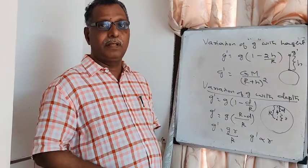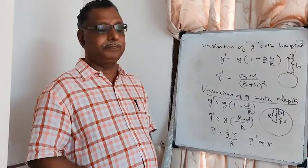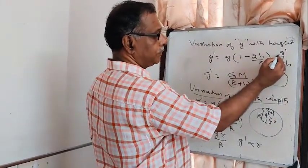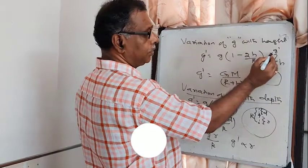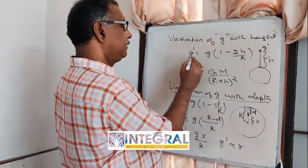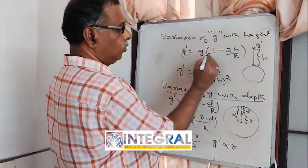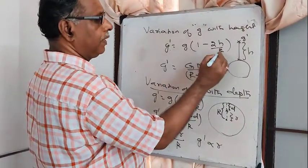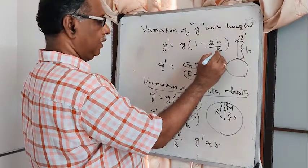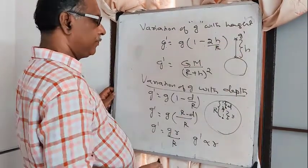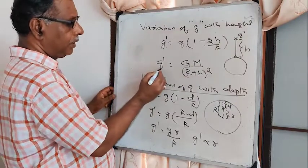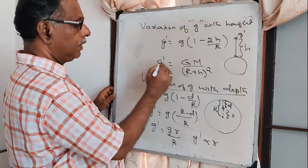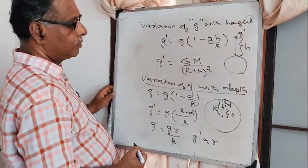For the variation of g with altitude: at a height H above the surface of the earth, the approximate relation is g' = g·(1 − 2H/R), where R is the radius of the earth. The exact relation is g' = G·M / (R + H)².